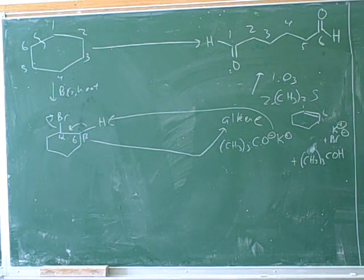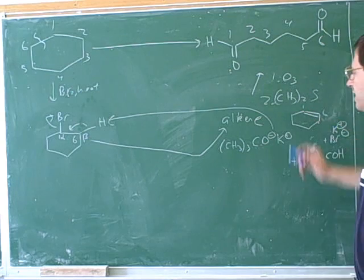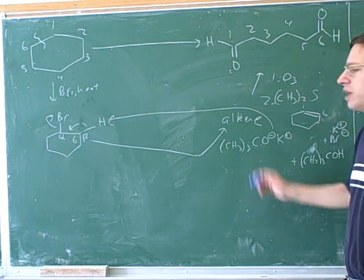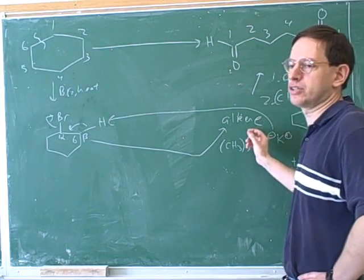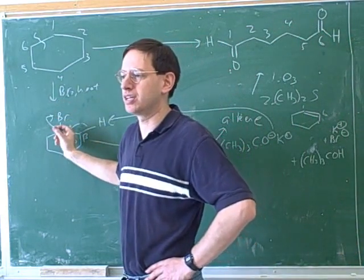All right. Well, you actually worked out a lot of this on your own. You figured out the ozonolysis. You figured out that we needed to do an E2 reaction. The one thing that you didn't do is asking, what do we need in order to do an E2? Well, we need a leaving group before we can do an E2.